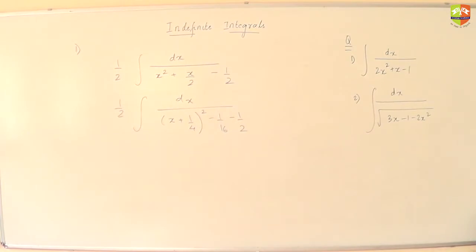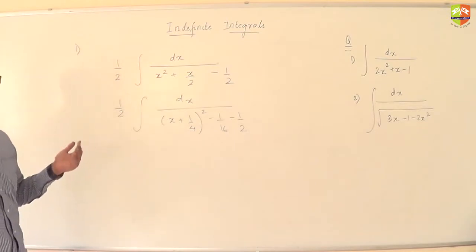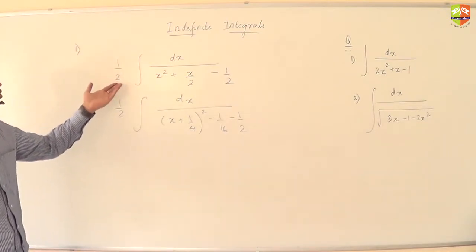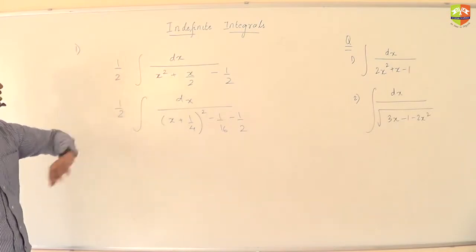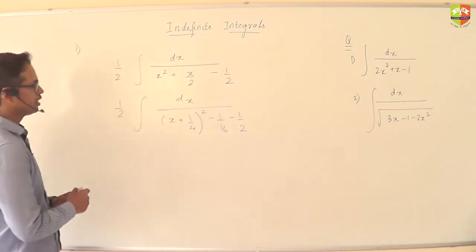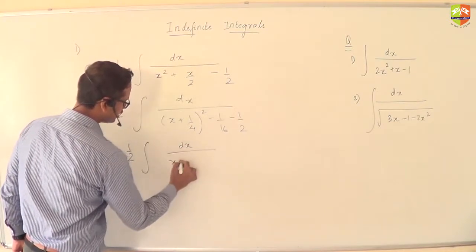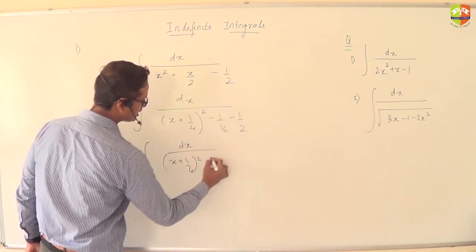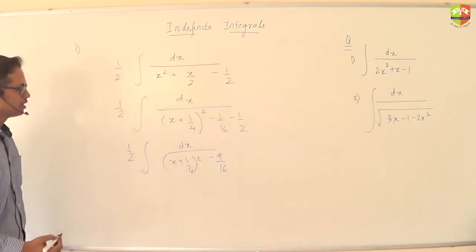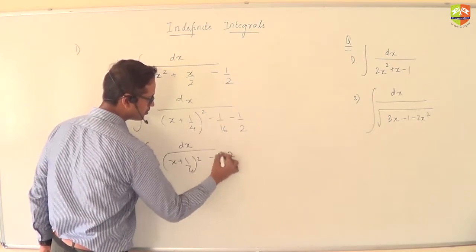We'll discuss both the cases. Now, there are multiple approaches. The approach which I have taken is, I first pulled out the two common from the denominator. I wrote it like this. Then I completed a perfect square over here. Now when you are completing a perfect square, you realize you will be getting here minus 9 by 16.